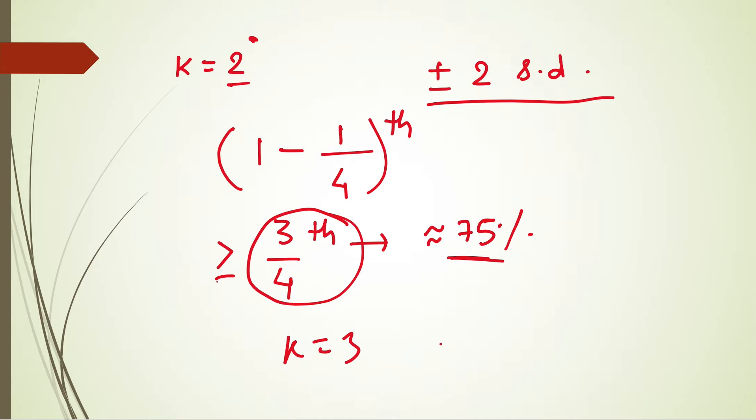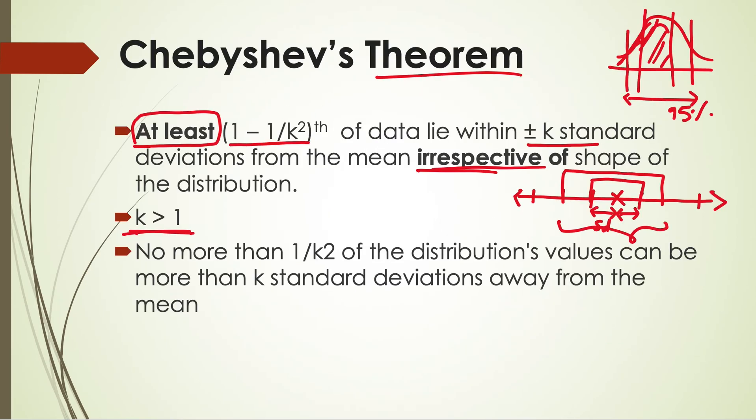If k is 3, this will become 1 minus 1 upon 9 or 8 divided by 9 which is equivalent to 88.88% or roughly 90%. This will be a useful theorem for approximating some range around the mean of the distribution.